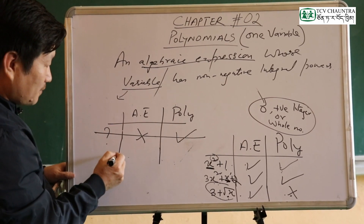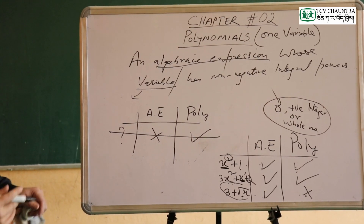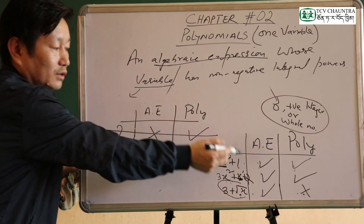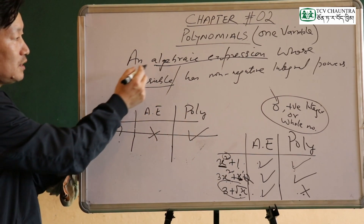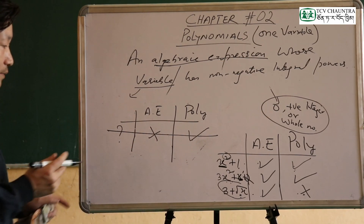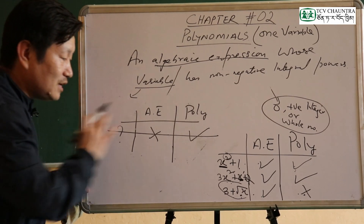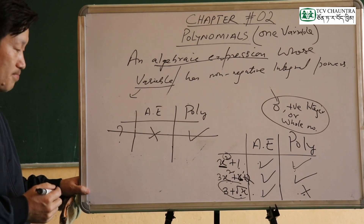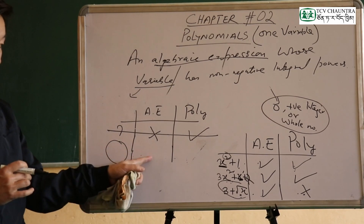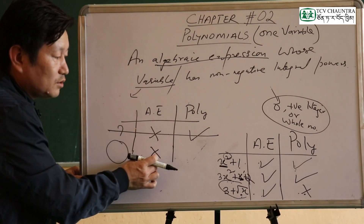The algebraic expression is broader than polynomials. All polynomials are algebraic expressions, but not all algebraic expressions are polynomials. A polynomial is a specific type of algebraic expression where variable powers must be non-negative integers.